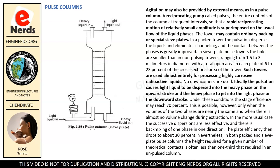Let us now move to pulse towers. Agitation may also be provided by external means, as in a pulse column. A reciprocating pump pulses the entire contents of the column at frequent intervals, so that a rapid reciprocating motion of relatively small amplitude is superimposed on the usual flow of the liquid phases. The tower may contain ordinary packing or special sieve plates. In a packed tower, the pulsation disperses the liquids and eliminates channeling, greatly improving contact between the phases. In sieve plate pulse towers the holes are smaller than in non-pulsing towers, ranging from 1.5 to 3 millimeters in diameter, with a total open area in each plate of 6 to 23% of the cross-sectional area of the tower. Such towers are used almost entirely for processing highly corrosive radioactive liquids.